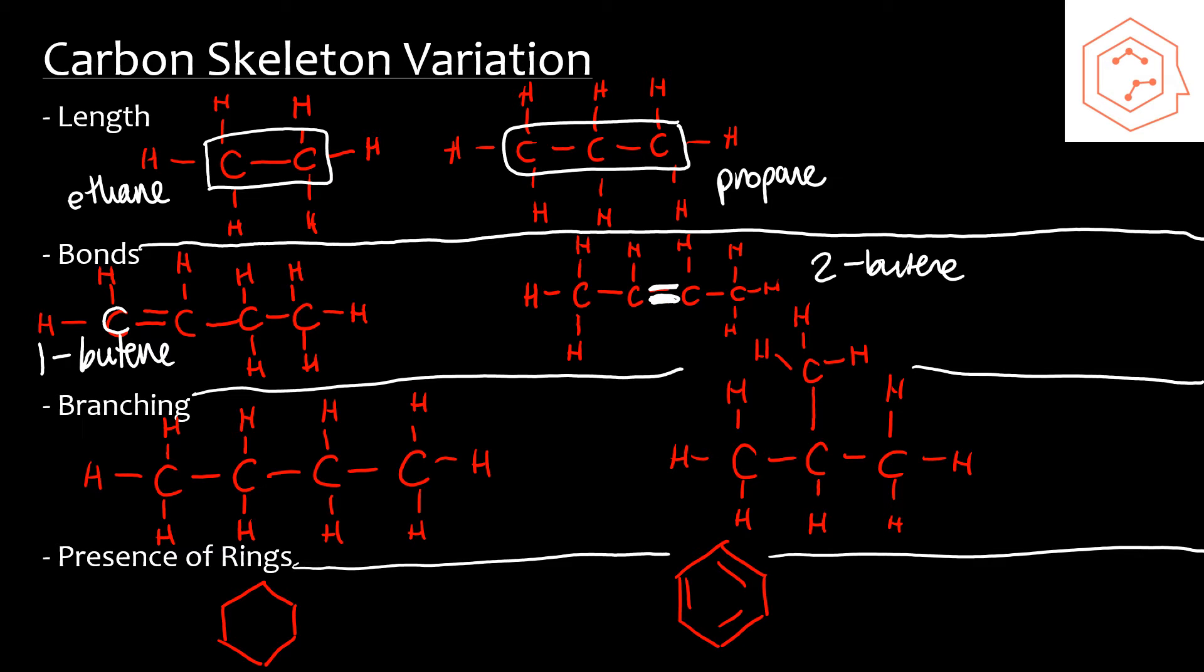It also differs in terms of branching. You have butane over here versus 2-methylpropane, which has a structure of carbons that looks like this versus just a straight line of four carbons.